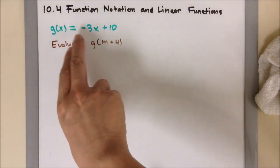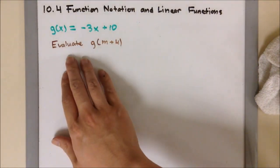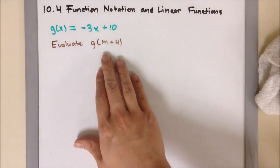Our example is g of x equals negative 3x plus 10. And our question is, evaluate g of m plus 4.